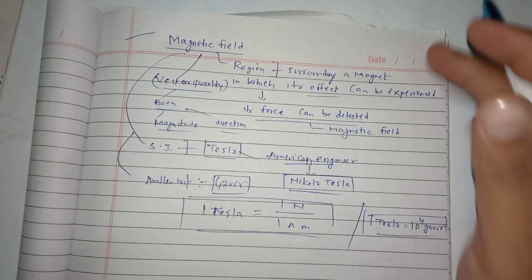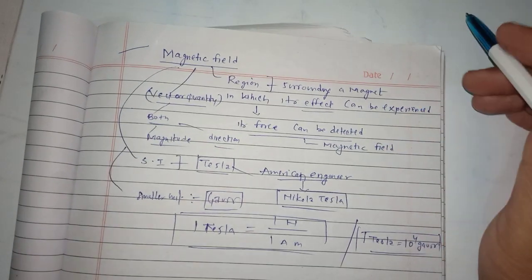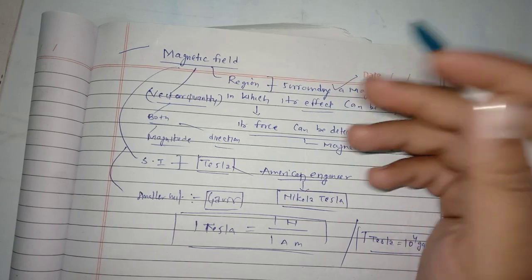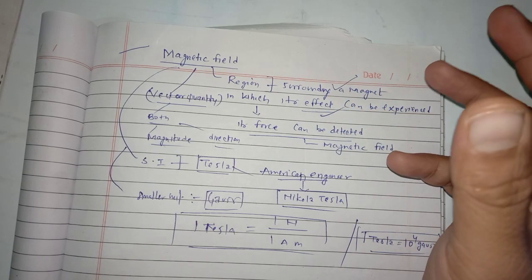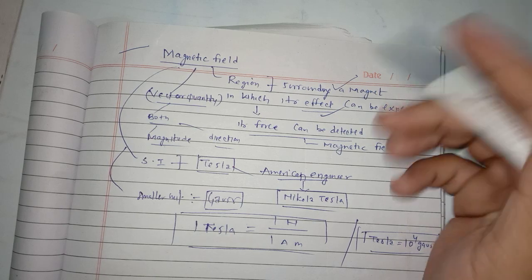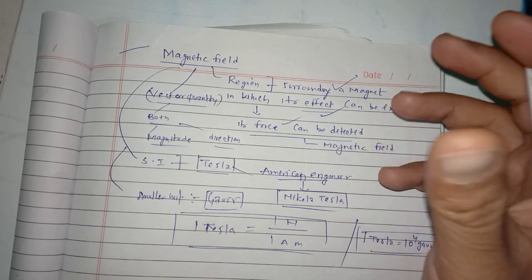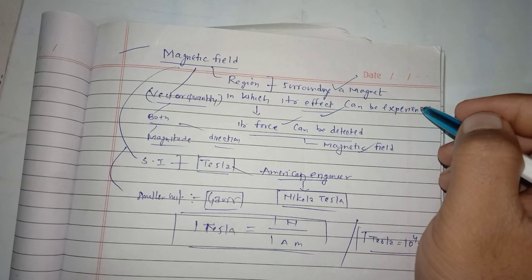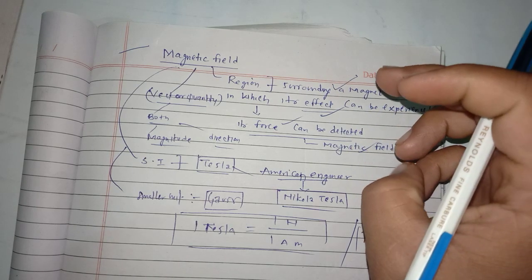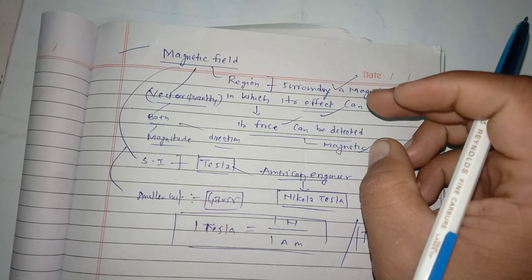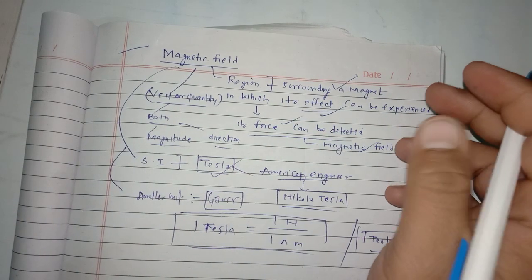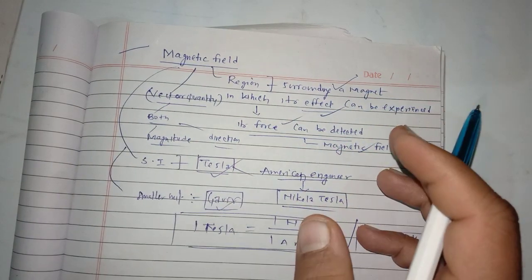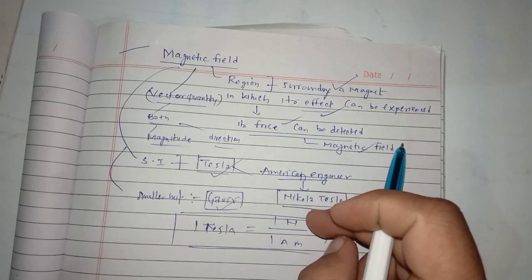So if you want to express what is magnetic field, we will see it is a region surrounding a magnet in which its effect can be experienced. Its effect means its force can be detected, that is what we are calling as magnetic field. If somebody asks you what is the SI unit of magnetic field, we will say it is Tesla. And what is the smaller unit of magnetic field, it is Gauss. And one Tesla is equal to one Newton upon one Ampere meter.